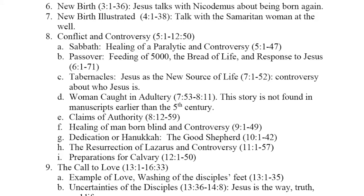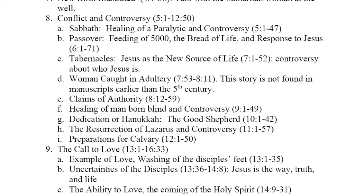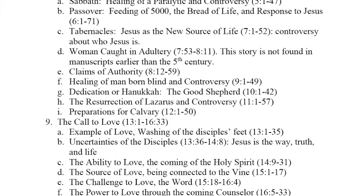Conflict and controversy develop in chapters 5 through 12. Jesus heals a paralytic on the Sabbath, and controversy develops. On the Passover, Jesus feeds 5,000 — the bread of life — with responses to Jesus in chapter 6. There is controversy over the tabernacle, Jesus as the new source of life, and controversy about who Jesus is. A woman caught in adultery is about to be stoned. Interestingly, this story is not found in manuscripts earlier than the 5th century, but it is consistent with the gospel accounts as far as the themes go.